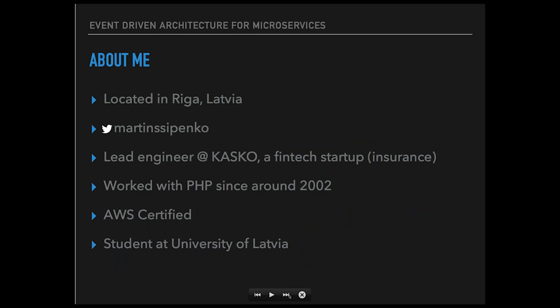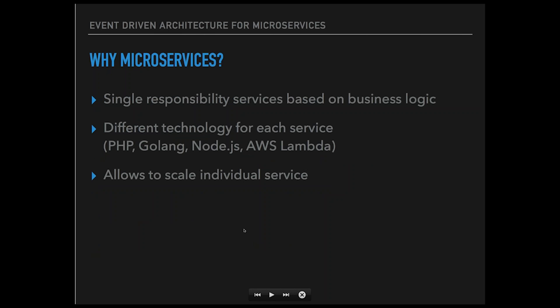I'm located in Riga, Latvia, which is in Europe. You can also find me on Twitter. I currently work as a lead engineer at Casco, which is a vintage startup based in London, and we're building an awesome insurance platform. I've worked with PHP and other technologies since around year 2002, and I am also an AWS-certified solutions architect. On top of that, I'm currently working towards my bachelor's degree at the University of Latvia. So, let's begin.